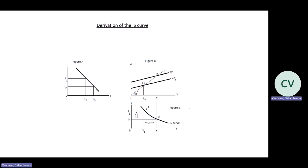If you take this to the IS diagram in figure C, on the vertical axis you have your interest rates, and on the horizontal axis you have the level of income and output Y. We're looking at I0. If you drop the Y line to figure C and extend the I0 line, where the two lines intersect is your first point on the IS curve. At that point, the goods market is in equilibrium at an interest rate of I0, and an equilibrium level of income and output Y.